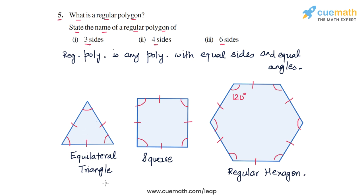So to summarize the three parts: a regular polygon of three sides is an equilateral triangle, a regular polygon of four sides is a square, and a regular polygon of six sides is a regular hexagon. This completes question number five.